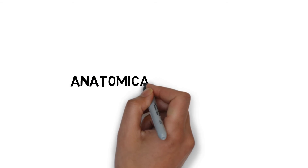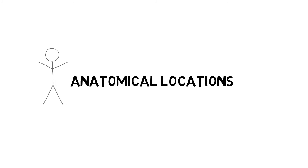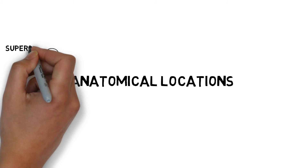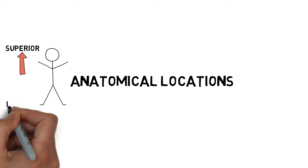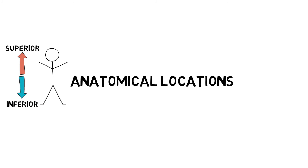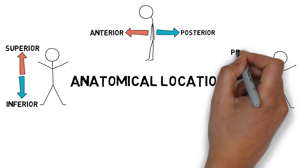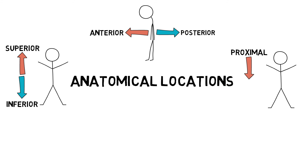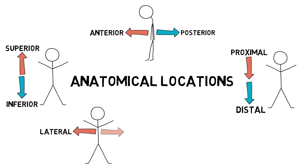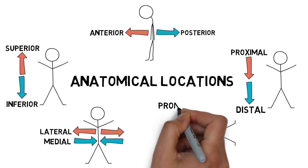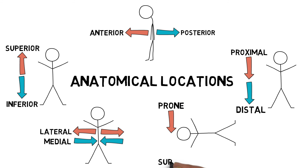Understanding human movement is essential to maximise rehabilitation and recovery programs. Anatomical locations describe specific landmarks on the body: superior is above a point of reference; inferior is below; anterior is towards the front; posterior is towards the back; proximal is nearest to the centre of the body; distal is away from the centre; lateral is further away or outside; medial is near the middle; prone is lying flat facing down; and supine is lying flat facing up.